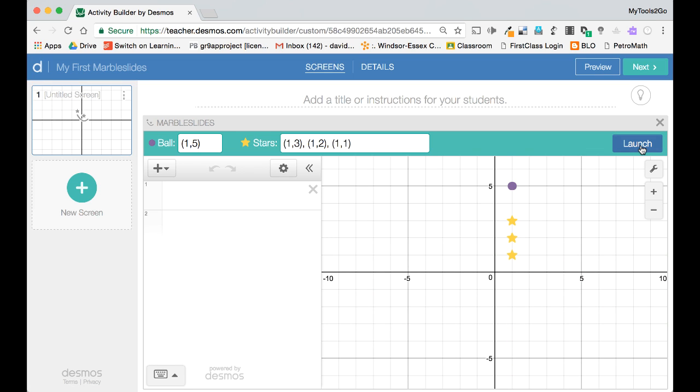That's the easy part. The hard part is figuring out what you will have your students do. Whatever you decide, keep in mind that you have the falling marbles. They have to collect the stars and they can roll on functions to do so.